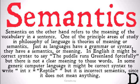Semantics, on the other hand, refers to the meaning of the vocabulary in a sentence. One of the principal areas of study in philosophy of language is theories of meaning, or semantics. Just as languages have a grammar or syntax, they also have a semantics or a meaning. For example, in English it might be correct syntax to say 'the puddle runs Greenland forcefully,' because we've put all the nouns, verbs, and adverbs in the right places — but there's not a clear meaning to those words.